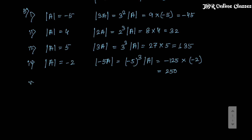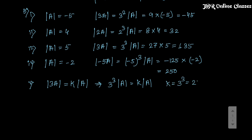Sub-problem 5: A is a 3×3 matrix. Given that det(3A) = k × det(A), find k. Since det(3A) = 3³ × det(A) = 27 × det(A), by comparing both sides, k = 3³ = 27.